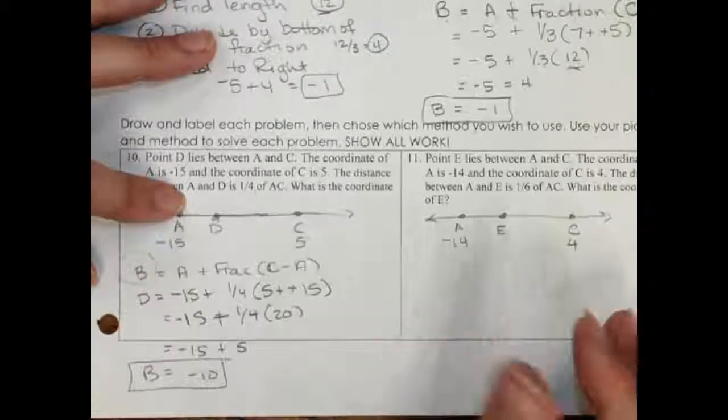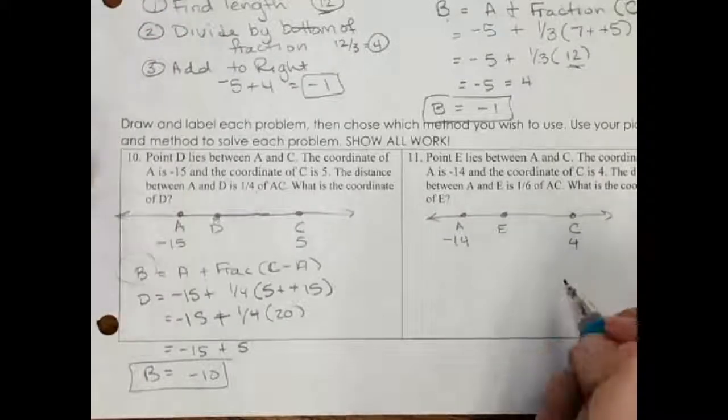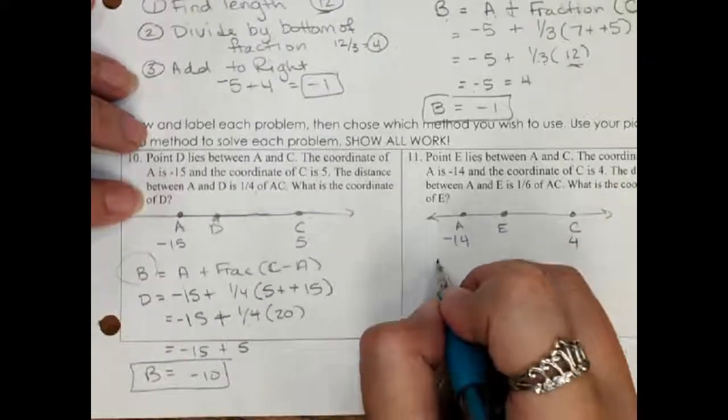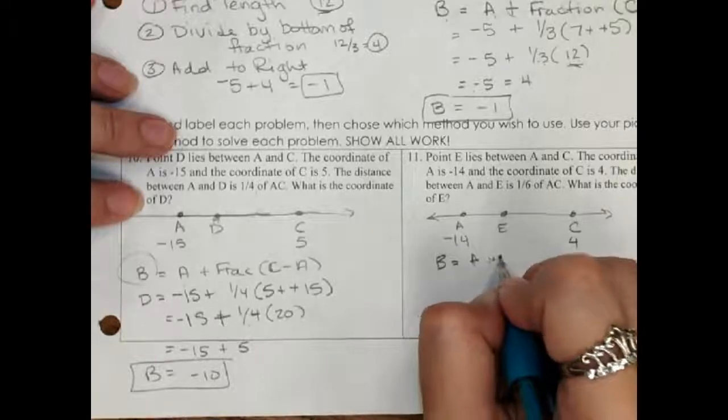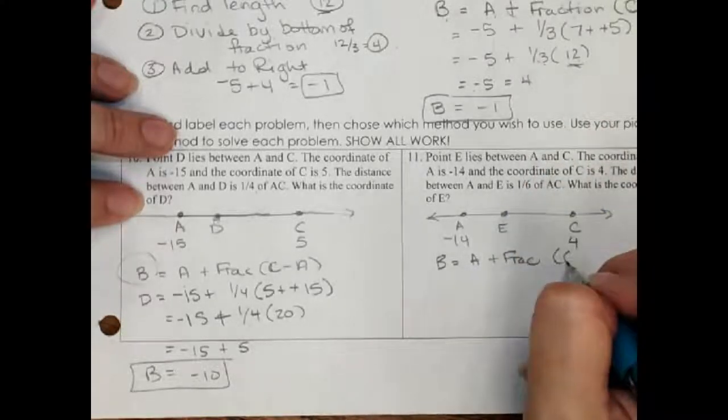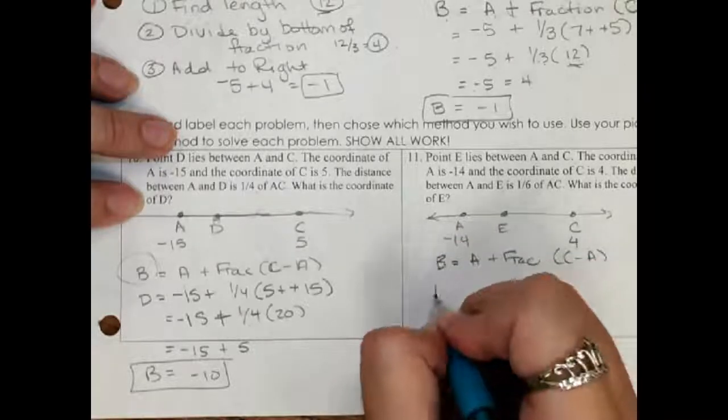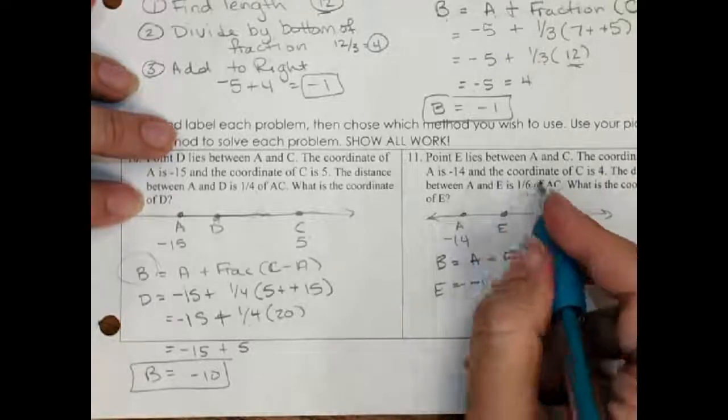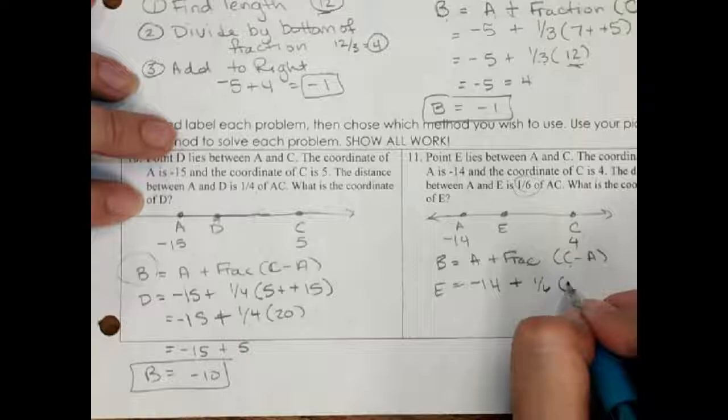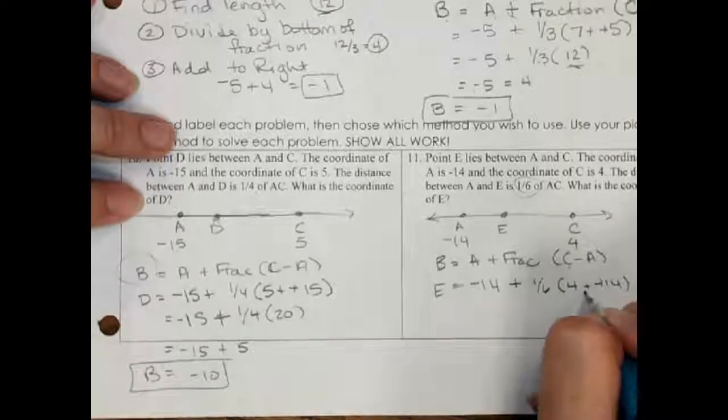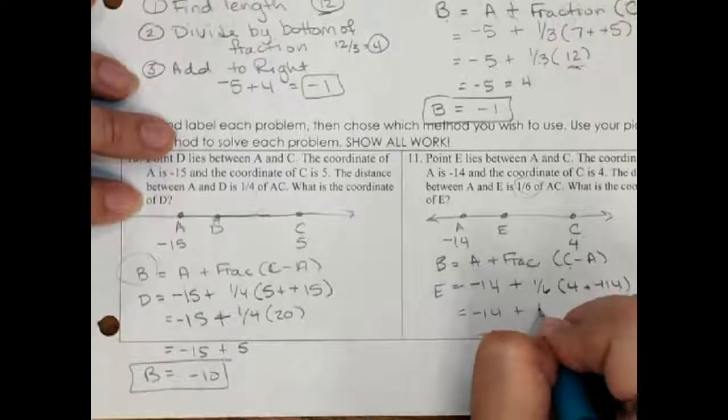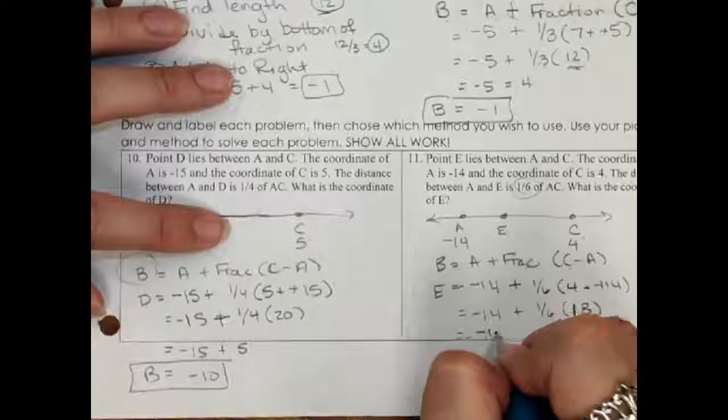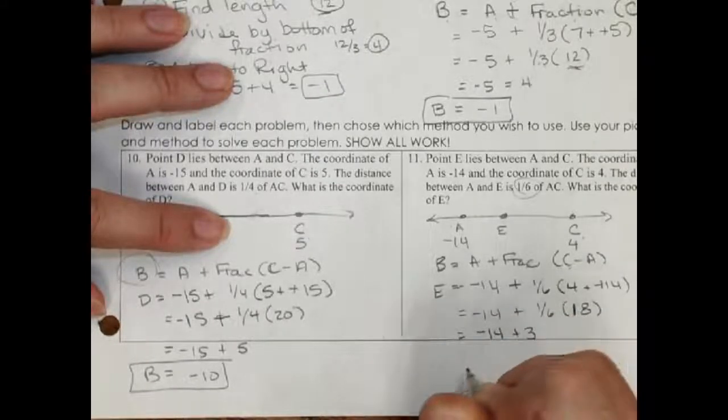We're going to do the same thing on the other one. I've already labeled it. Pause and rewind the video as you need to to keep up with me. I've labeled it. I'm going to use my formula. Just copying it down. It's actually E in this problem. This is this end. My fraction is 1 sixth. This is this end. Minus a negative is a positive. 18 divided by 6 is 3. So I get negative 11.